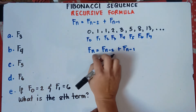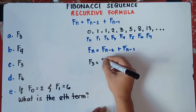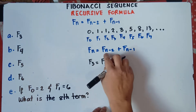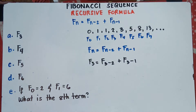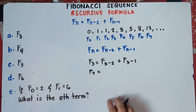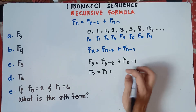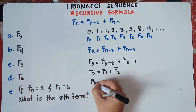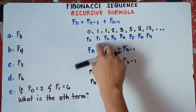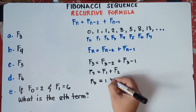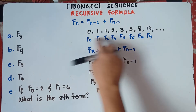For F sub n, substitute the value of n. You're looking for F sub 3, so this will be F sub 3 equals F sub 3 minus 2 plus F sub 3 minus 1. So F sub 3 equals F sub 1 plus F sub 2. Based on the patterns, F sub 1 is 1 and F sub 2 is also 1. So 1 plus 1 — that's why your F sub 3 is 2.